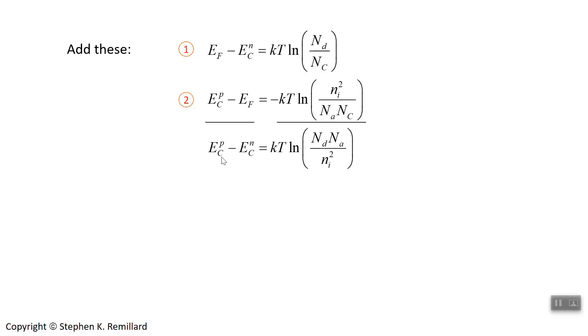So they're added together. Now we have an expression for the conduction band edge on P side minus conduction band edge on N side, and it's a function of the doping densities and this N sub i, which is always 10 to the 10th for silicon and the values for other materials. That is the built-in potential. We now have our expression, so you can solve for the built-in potential if you know the doping densities.